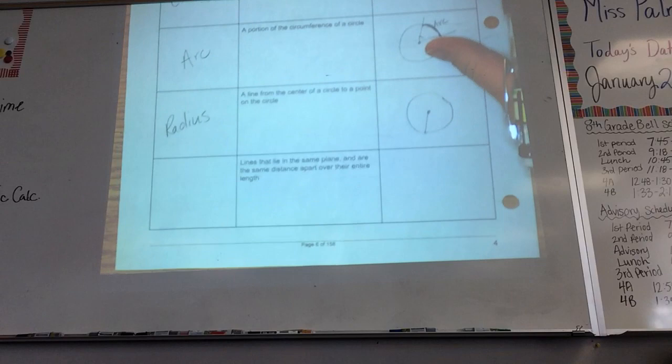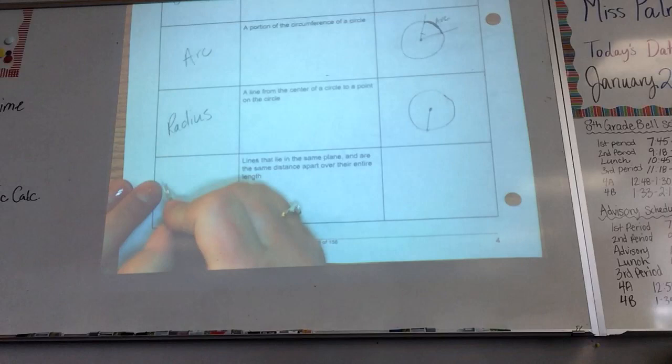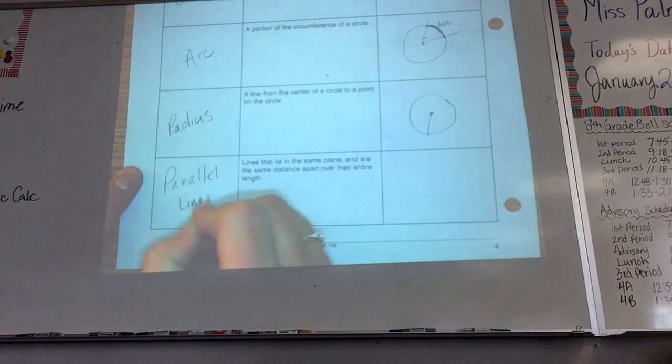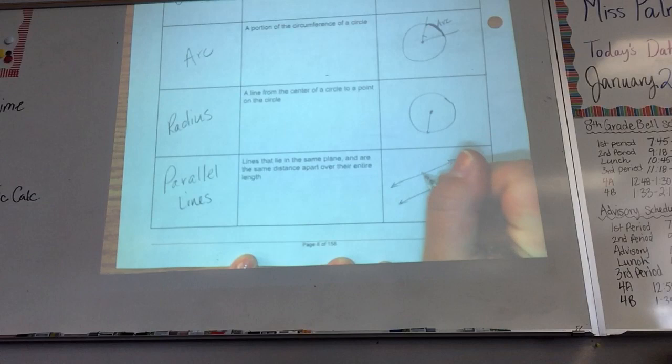Okay, lines that lie on the same plane and are the same distance apart over their entire length. What are those called? Parallel lines. Okay, and what do they look like? Two lines or more lines that don't cross. And how do you tell if they're parallel? What's the notation that shows they're parallel? Yeah, they could have one arrow set or two arrow sets, something like that.